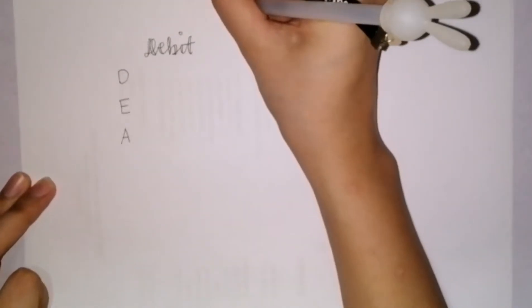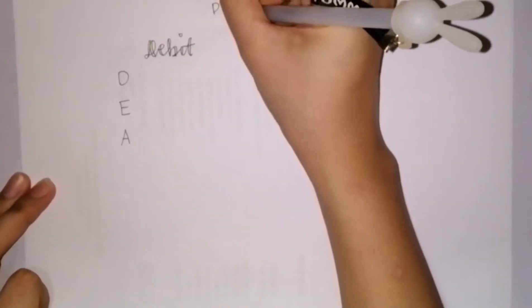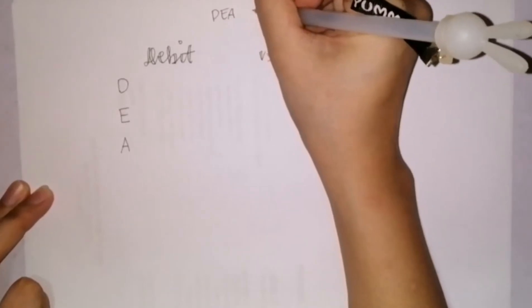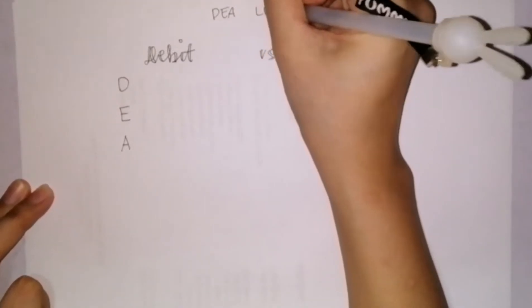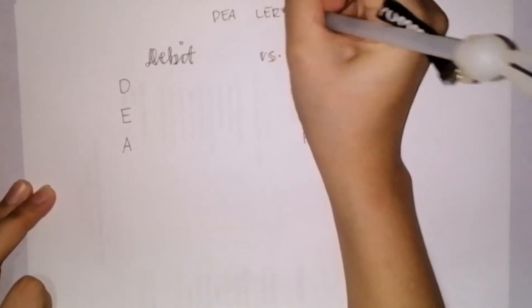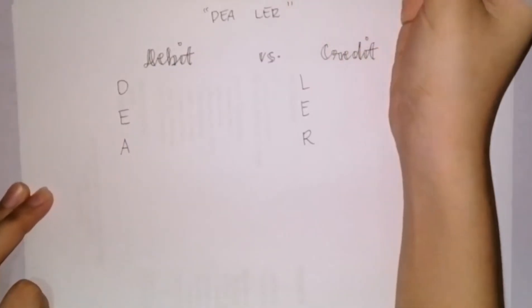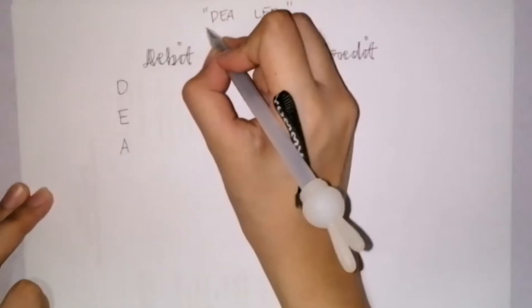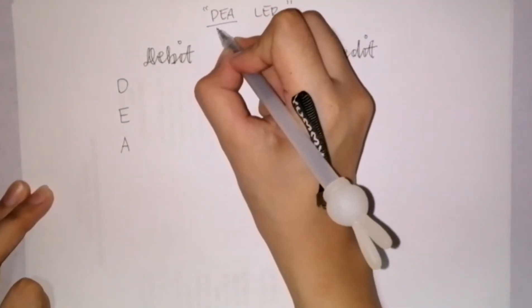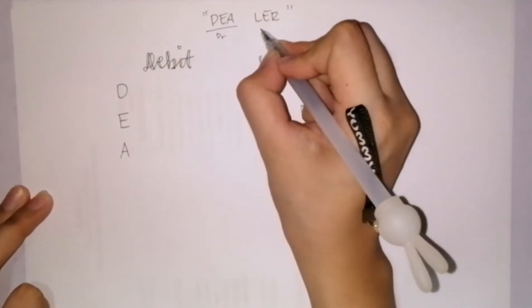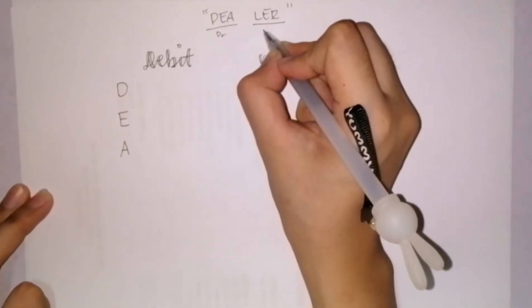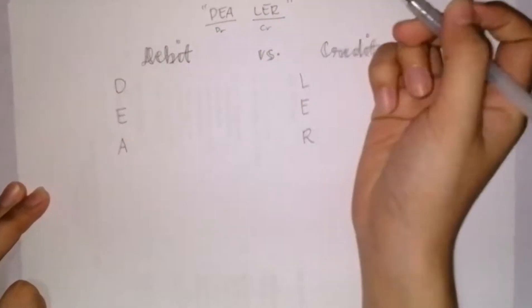The acronym that we need to remember is DEALER. The D is for the debit side, and LUR is for the credit side.